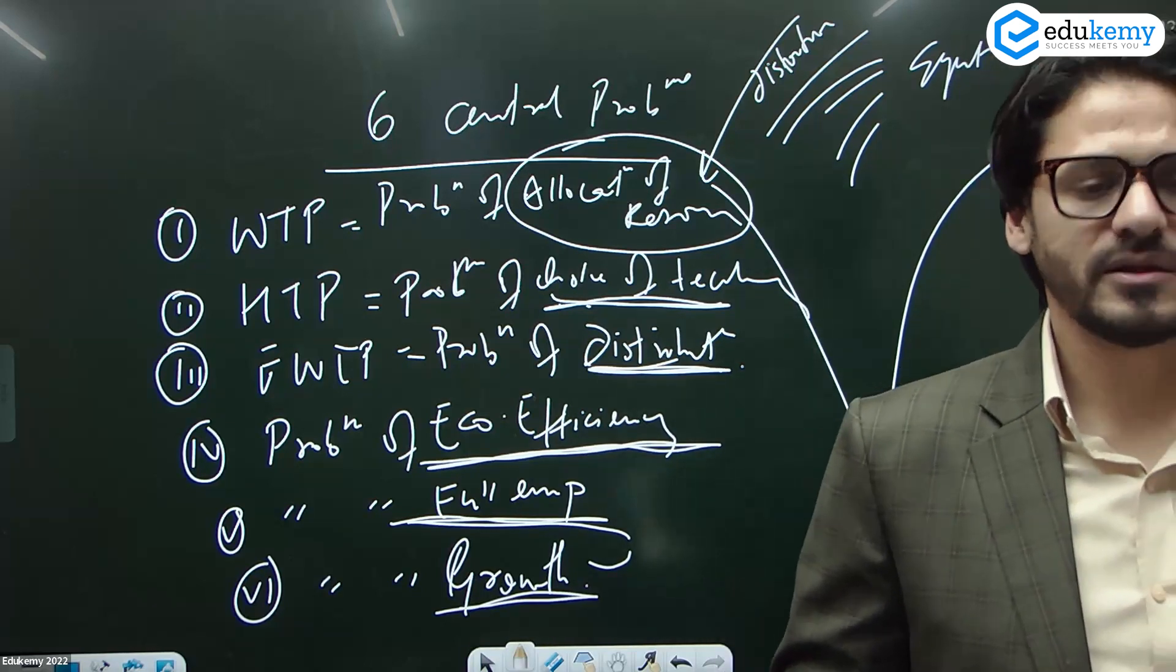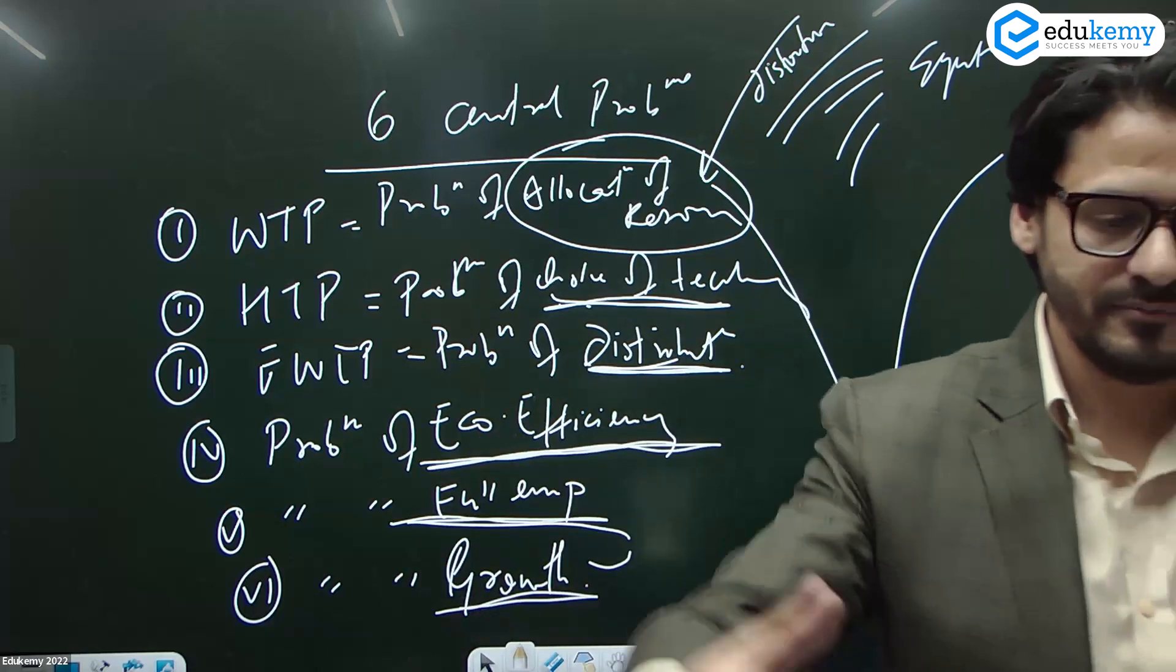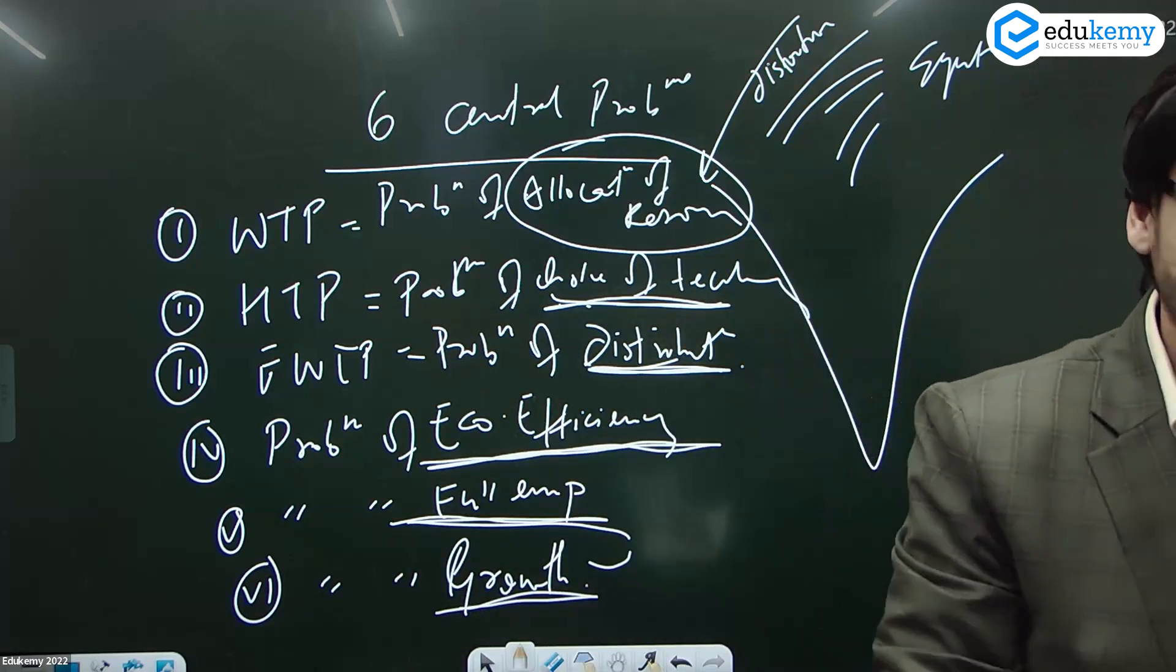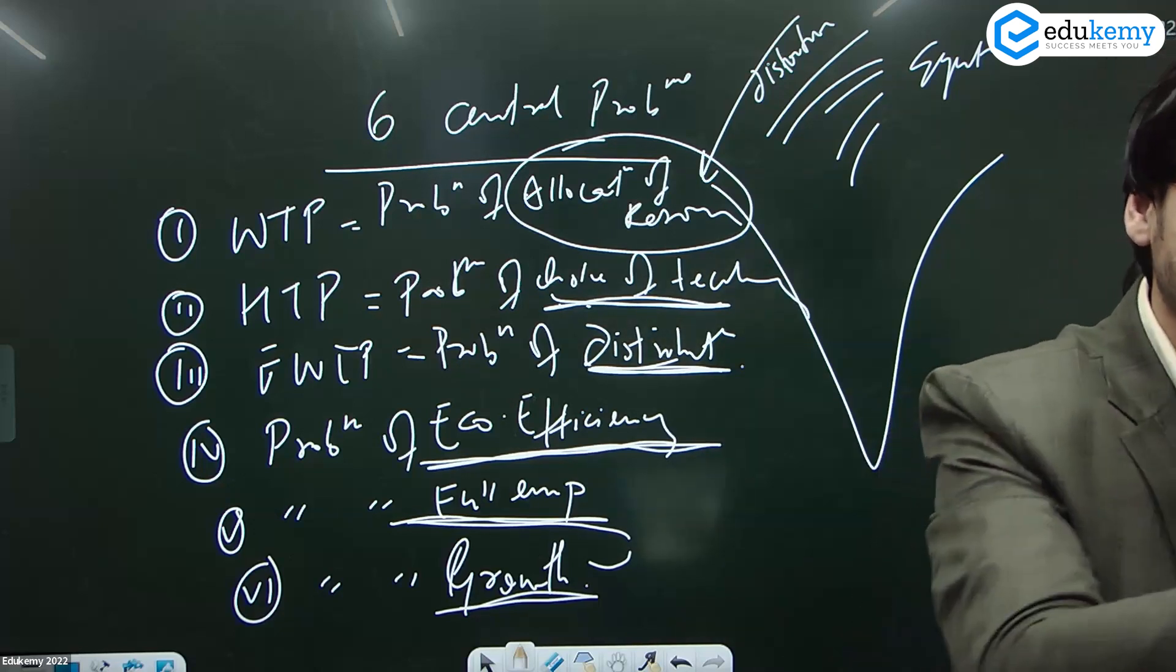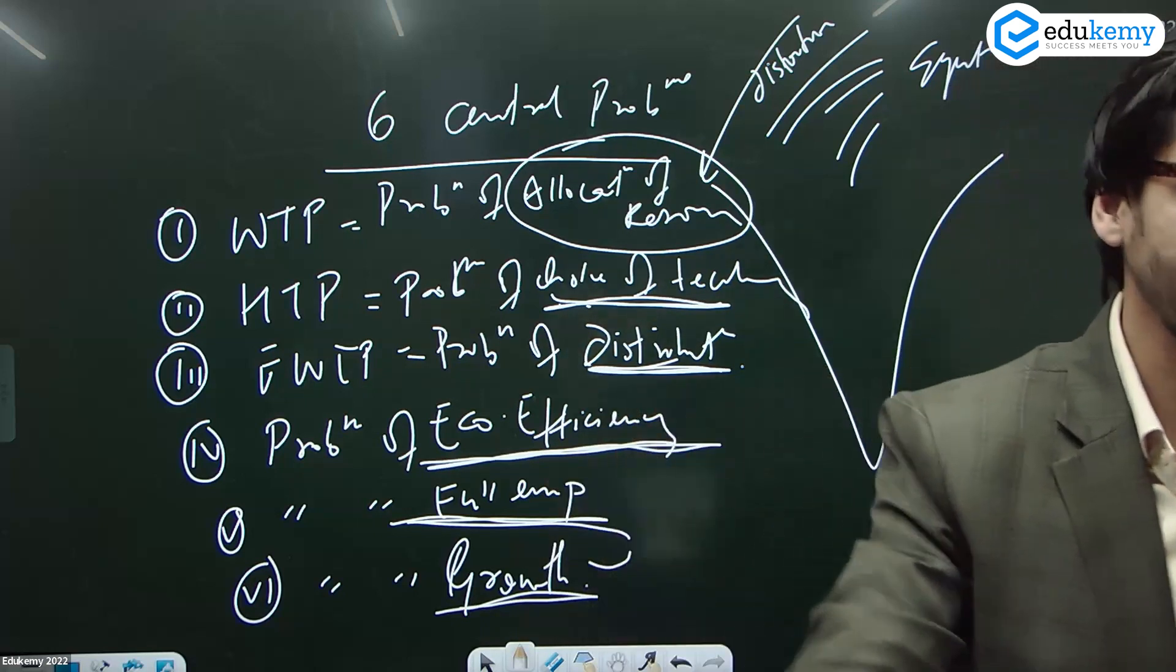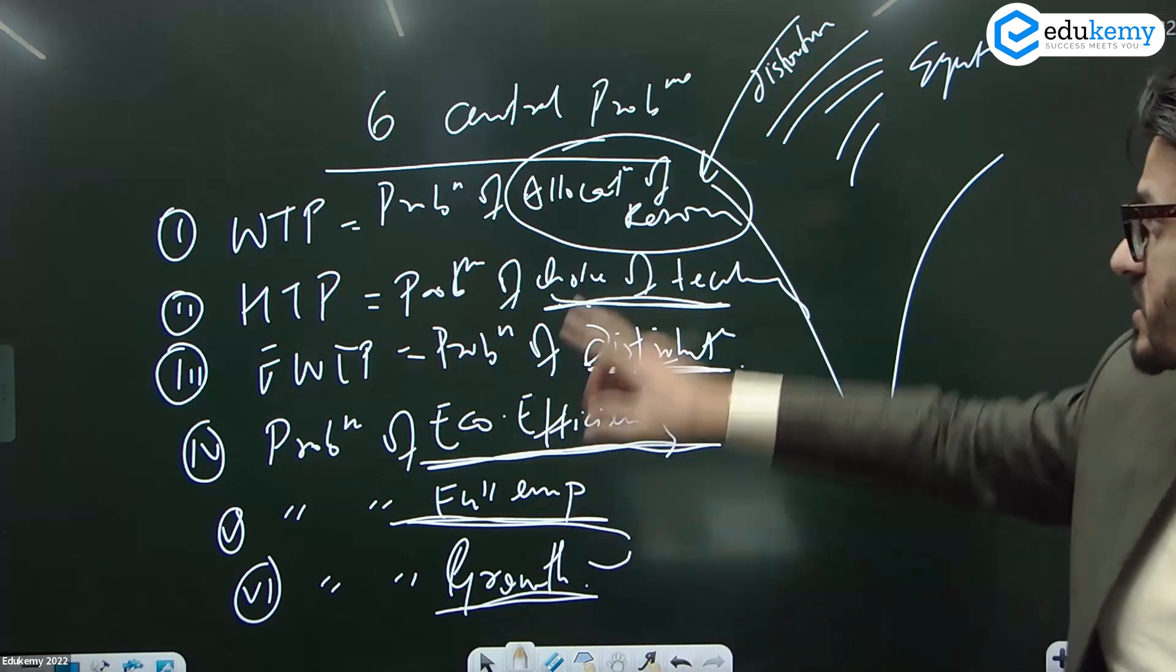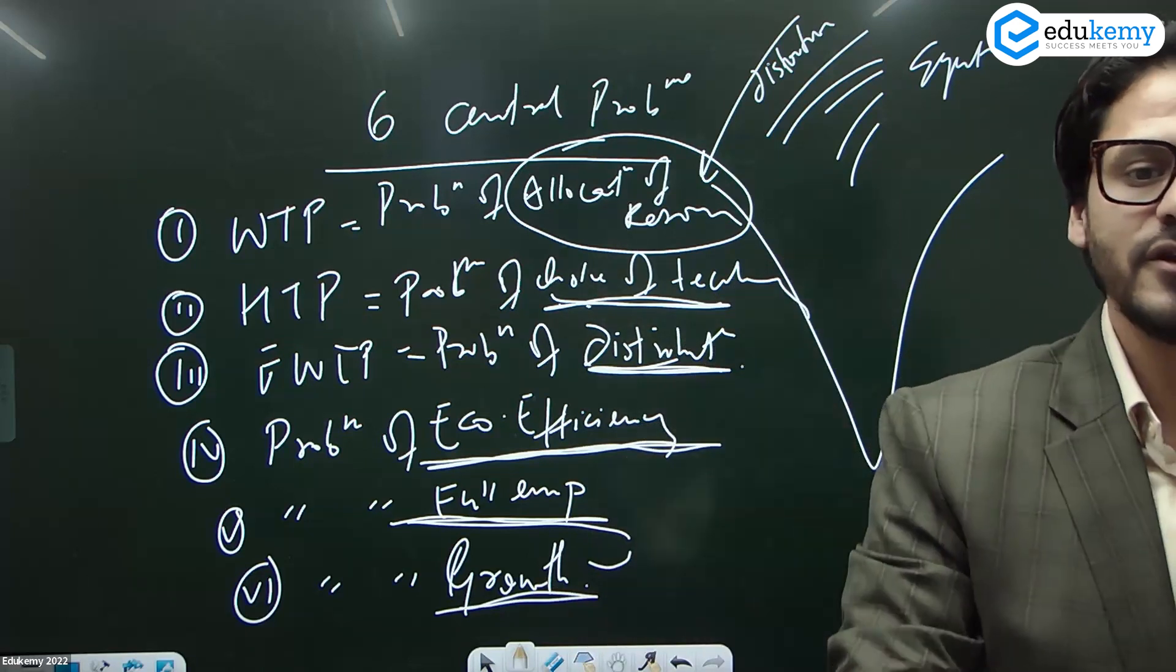What kind of distortion? Until now, the government collected a lot of resources and then allocated these resources to different places: health, capex, revenue expenditure, interest payments, education, roads, highways, etc. So government is allocating the resources, but now it's creating a distortion through tax expenditure. How? Because it is favoring some sectors.